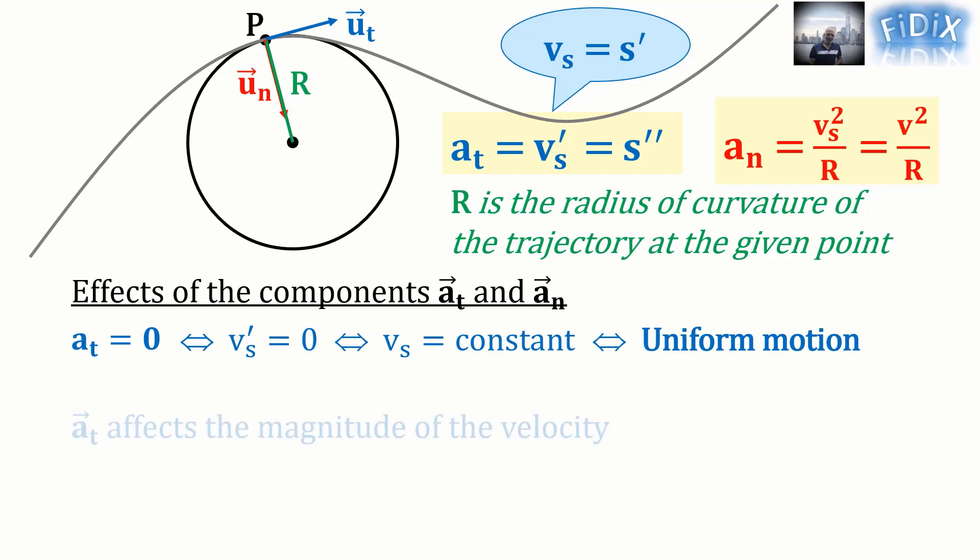the motion is uniform. Thus, we can conclude that a_t affects the magnitude of the velocity.